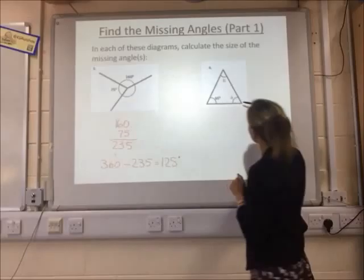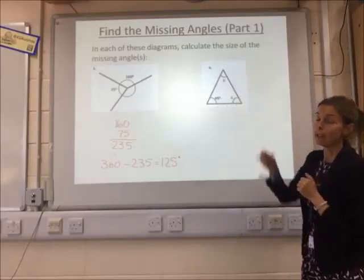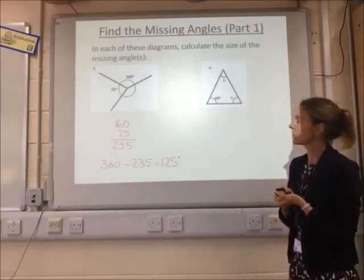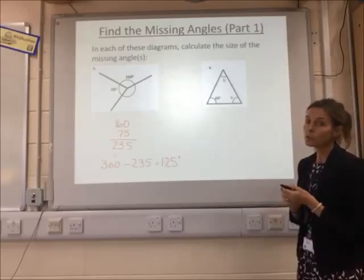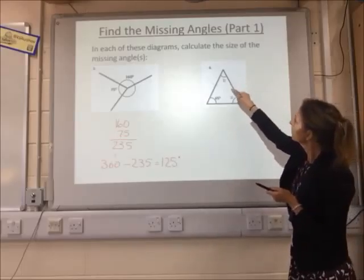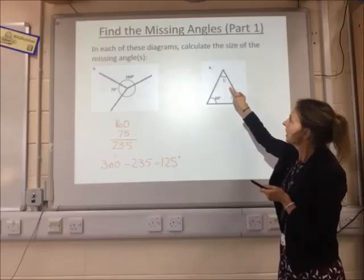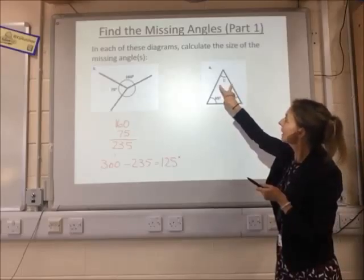Last one. Here we've got a triangle. Again, angles in a triangle add up to 180 degrees. You've also got a special type of triangle. Here you've got two lines, and that stands for these two sides being the same.